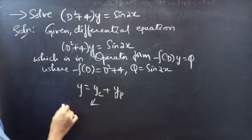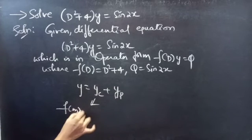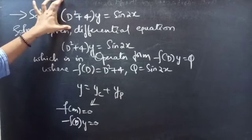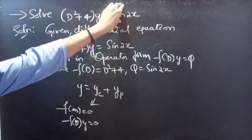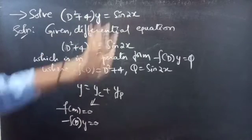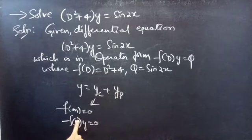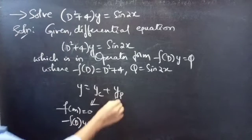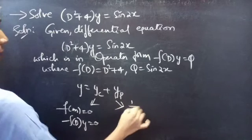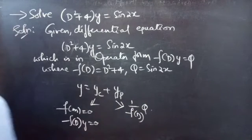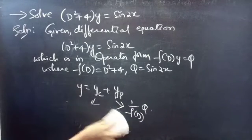We will find yc using the roots of the auxiliary equation of the homogeneous equation. Simply take the RHS to 0 to get f(D)·y = 0, which is the homogeneous equation. And we will find yp using 1/f(D) · Q. So firstly, let us find the complementary function using the auxiliary equation.